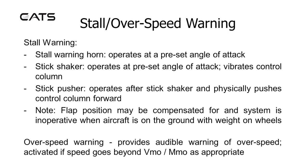Stall or overspeed warning. Stall warning: the stall warning horn operates at a preset angle of attack. A stick shaker operates at a preset angle of attack and vibrates the control column. A stick pusher operates after the stick shaker and physically pushes the control column forward. Flap position may be compensated for, and the system is inoperative when the aircraft is on the ground with its weight on its wheels. Overspeed warning provides audible warning of overspeed and is activated if the speed goes beyond VMO or MMO as appropriate.